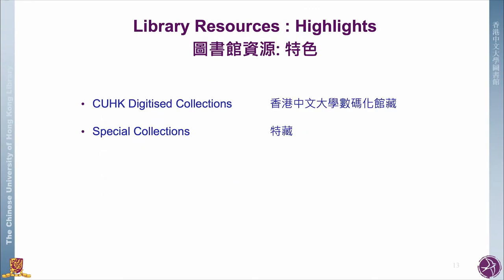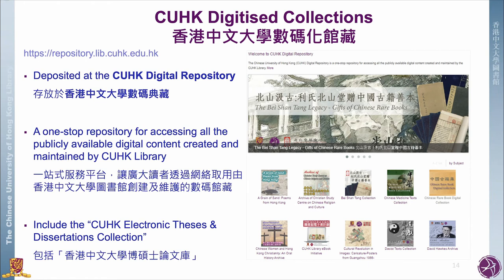Our library also has its own collections. The CUHK Digitized Collections and the Special Collections are two main ones, and they contain affluent research materials. The CUHK Digitized Collections contain substantial millions of digital files created and maintained by our library. The areas covered range from literature, culture, arts, politics, society, and religion.